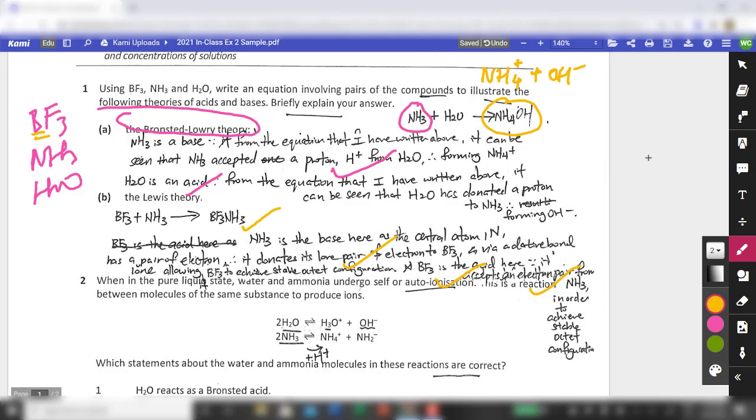Take note that usually for adducts like this, meaning a coordinated compound that's formed from Lewis acid and Lewis base, we normally write it as BF3 with a dot in the middle and then NH3. So this is the usual way we write it. But it is perfectly fine if you write it the way this particular student wrote, BF3 and NH3.